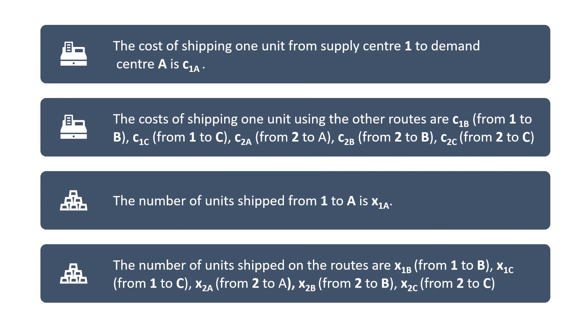X2A is the number of units that can be shipped on the route connecting supply point two to demand center A, X2B from two to B, and X2C from two to C. This is the notation that will be used in the formulation of the transportation problem.